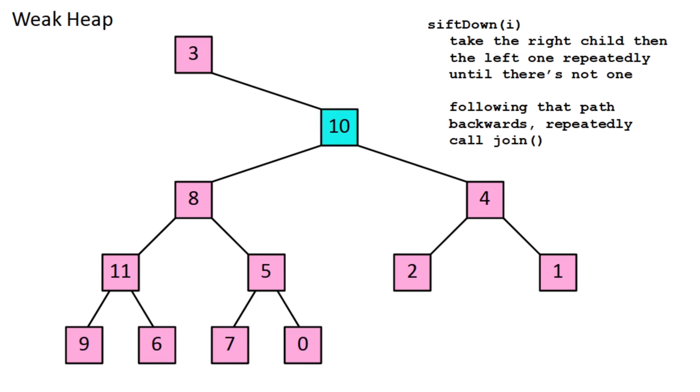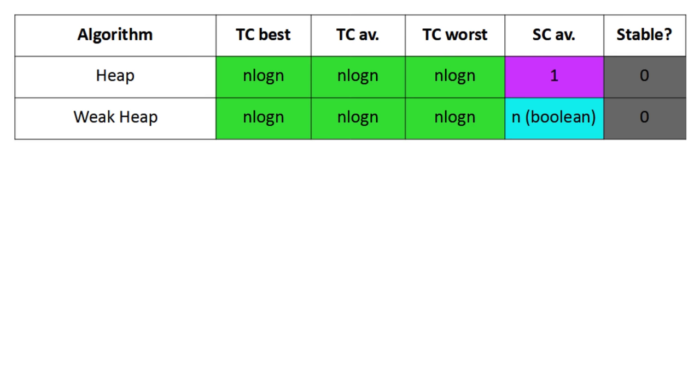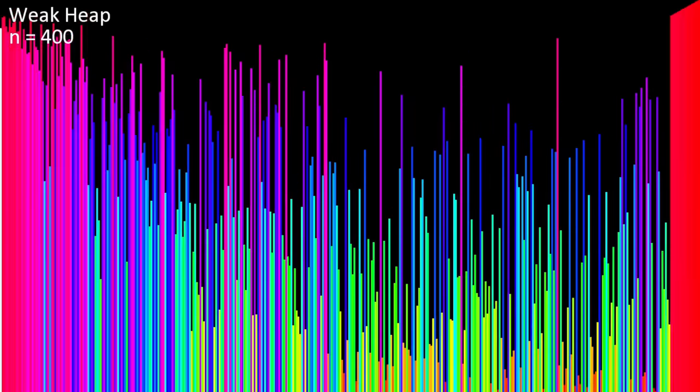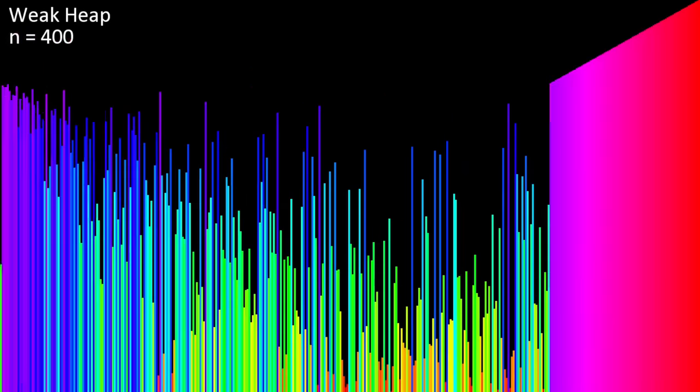To do that, you take the right child, and then repeatedly take the left child until there isn't one. The max value must be somewhere along this line, so following that same path backwards, you repeatedly call the join operation to bring it to the top and restore the weak heap property. Weak heap sort ends up being about twice as fast as the original heap sort. It does use o of n space complexity, but this is just a boolean array which uses at most n bytes, unlike merge sort whose auxiliary arrays store values from the list.